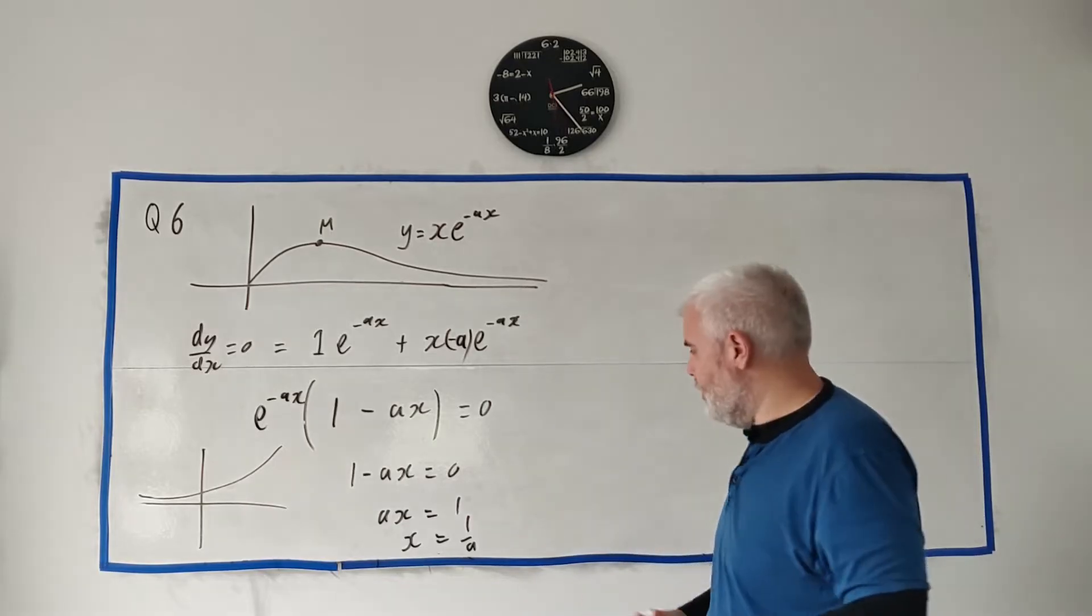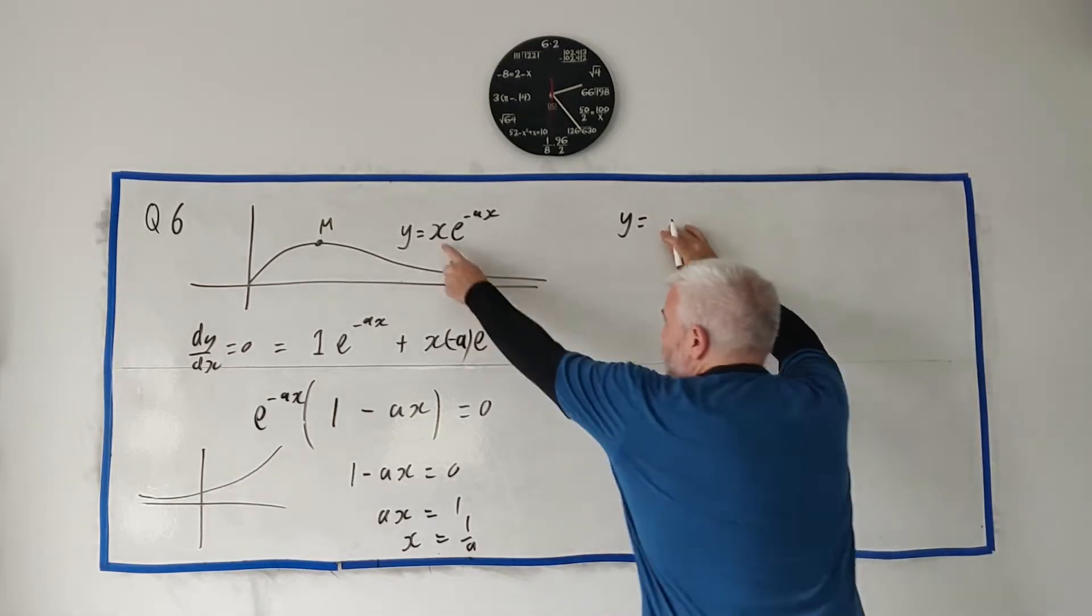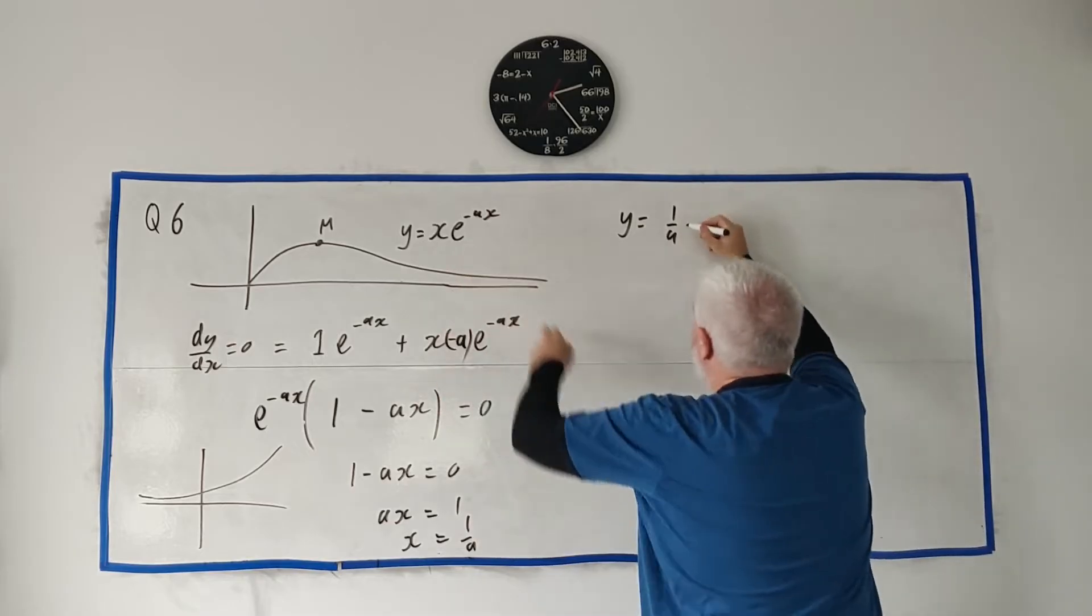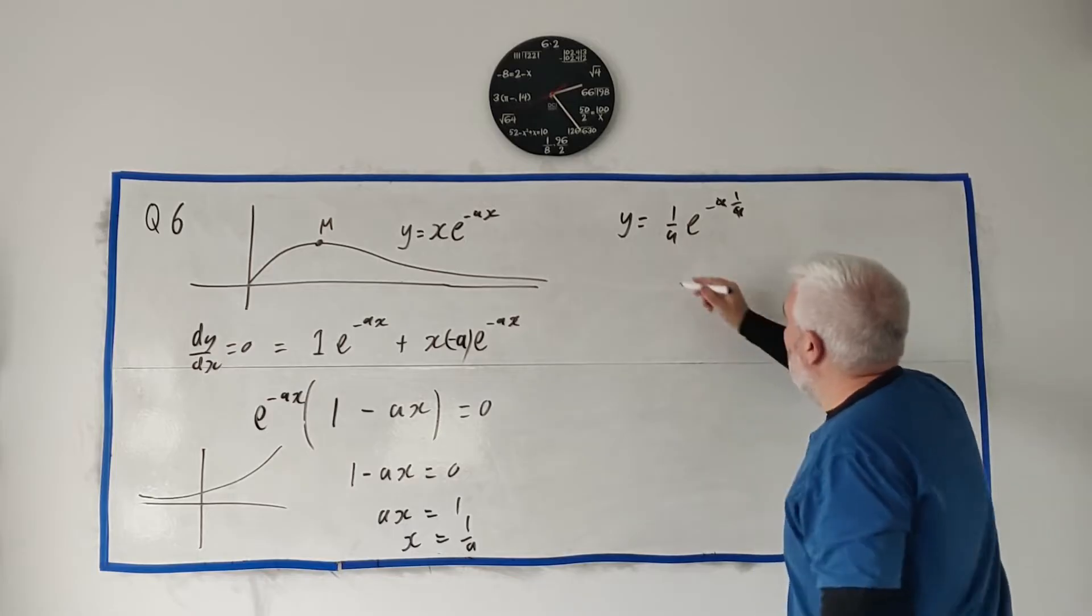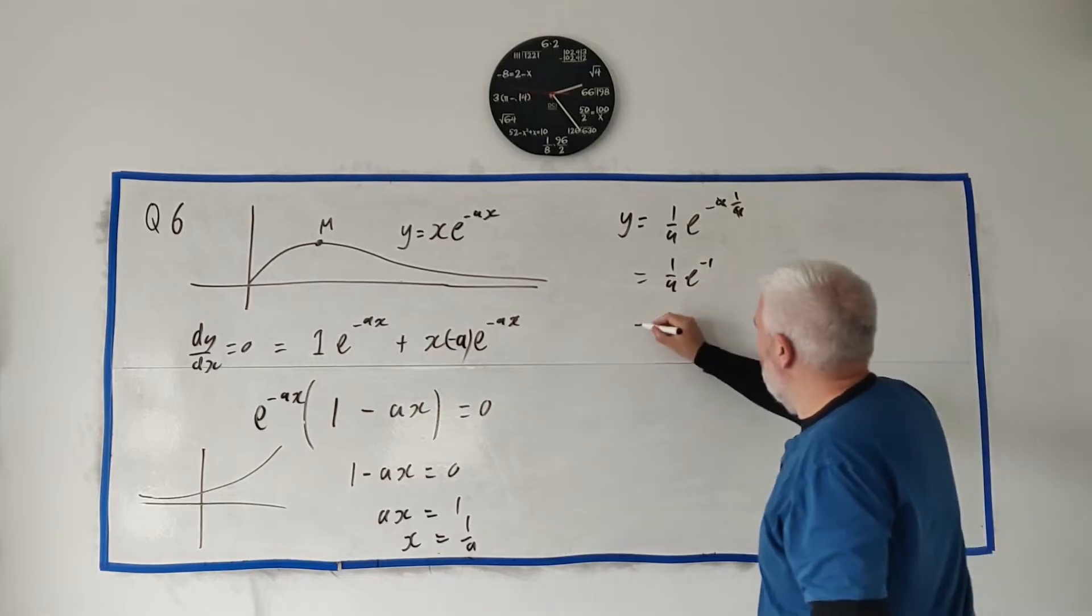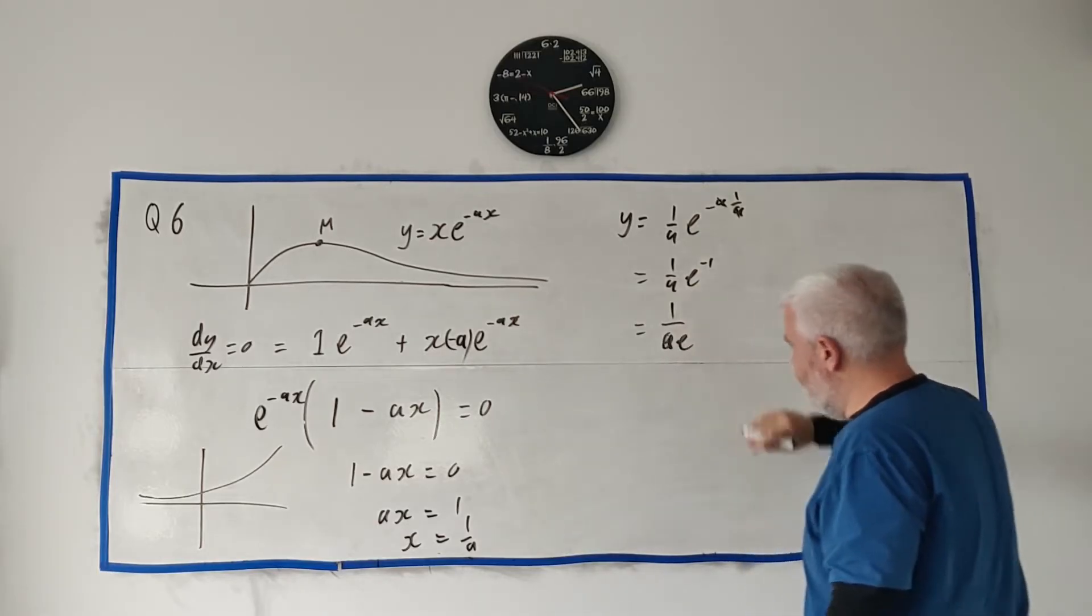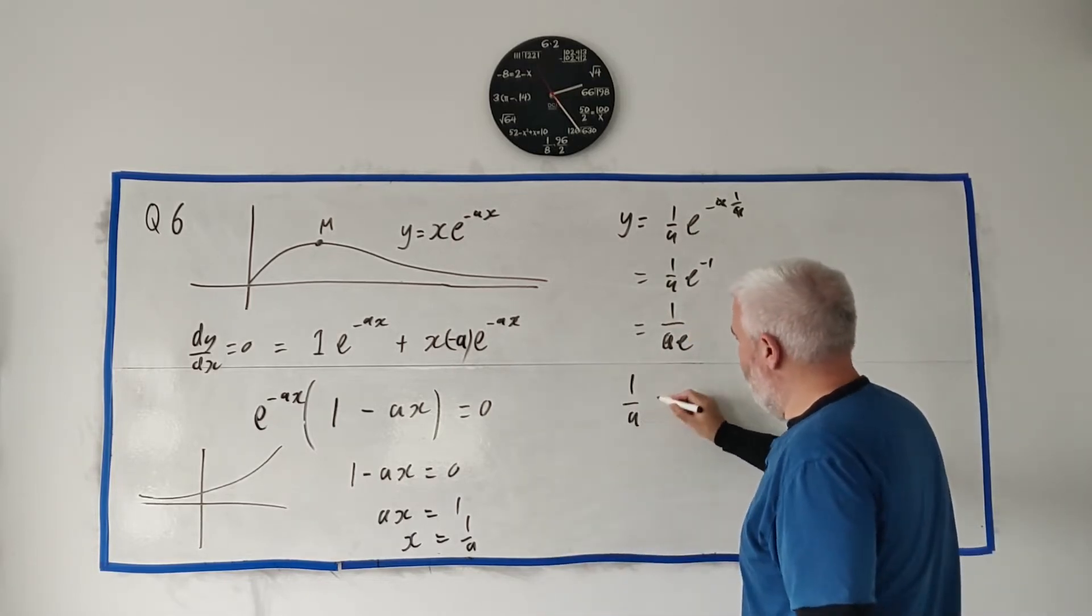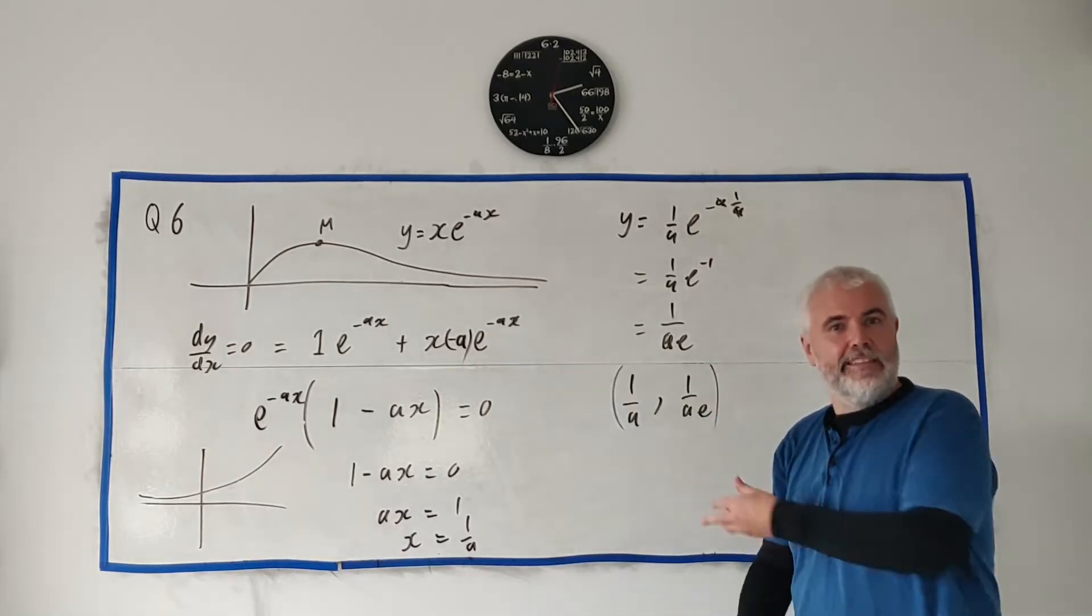They asked for coordinates, so they want y as well. y must equal (1/a)e^(-a·1/a). The a's cancel, so that becomes (1/a)e^(-1) or 1/(ae). To put these together into a point: (1/a, 1/(ae)). That's the coordinates of M, the answer to part A.